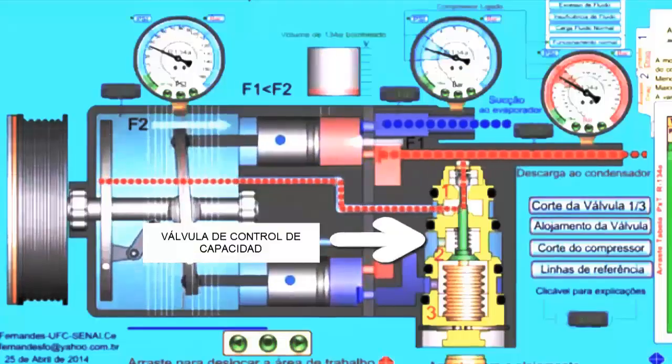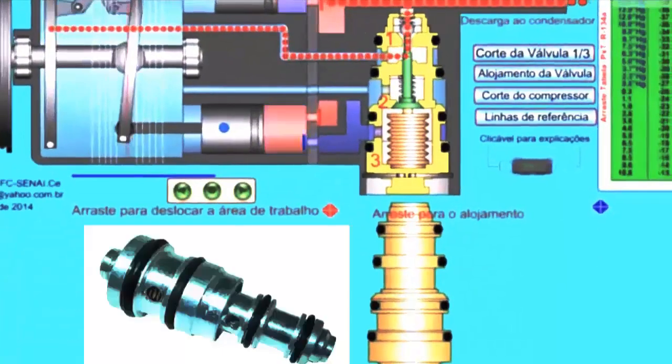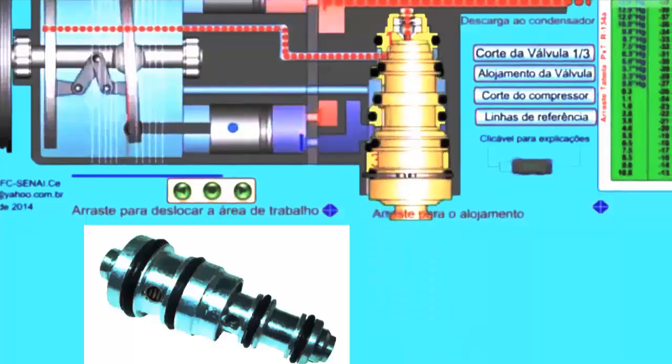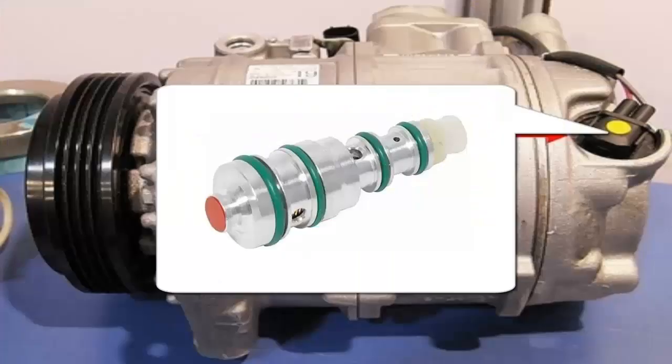In this video, we will study the operation and failures of the stroke or swashplate position regulation valve in mechanically operated automotive piston compressors. This valve is also known by the acronym POA, Pilot Operated Actuator, whose pilot technology enables precise control of the piston stroke according to system demand.